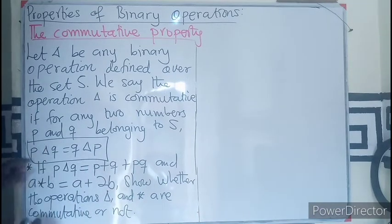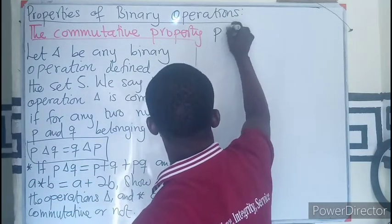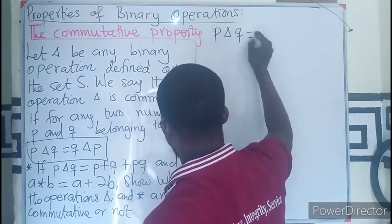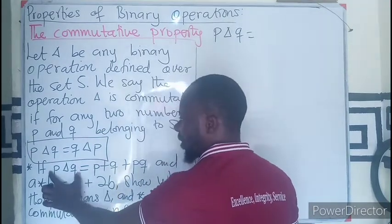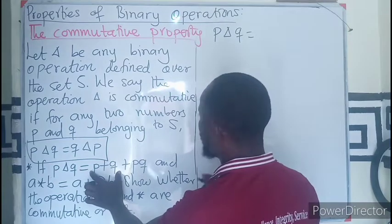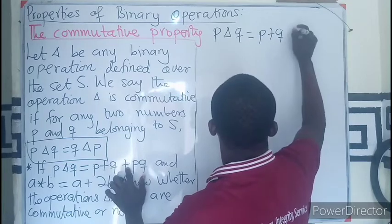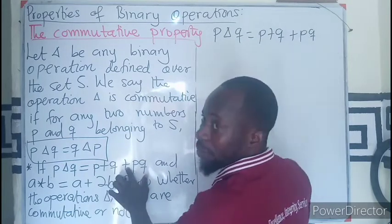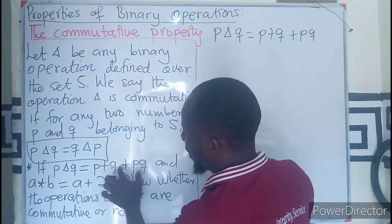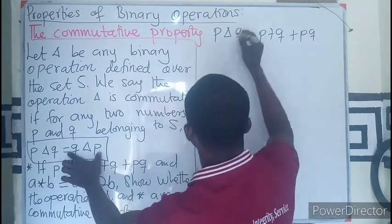So first of all, let's take this as our marking scheme, beginning with the left. We have the right. So for the left, which is P △ Q, using the definition of the operator, which is going to be P + Q, you have P + Q, then plus PQ. That is the operator definition. That is our left hand side.